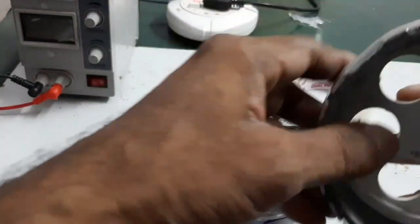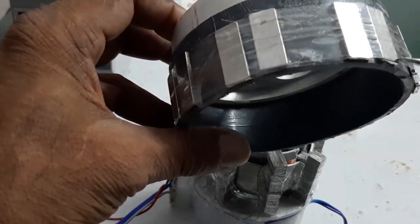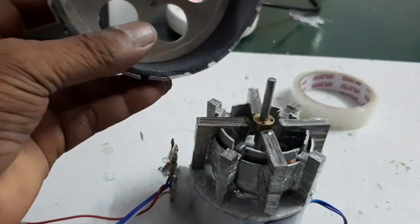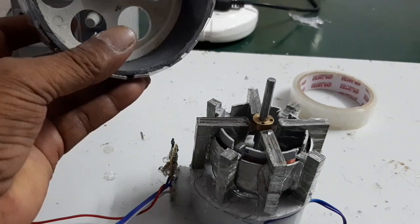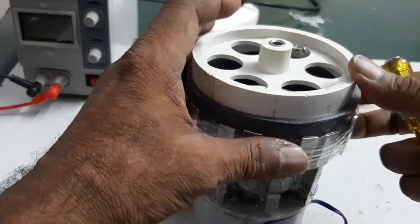Now here, this is the 8-pole rotor, but each pole has two magnets. Now I'm going to insert the rotor and test the motor.